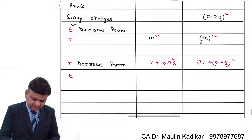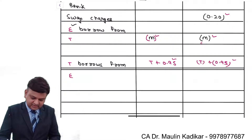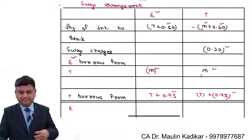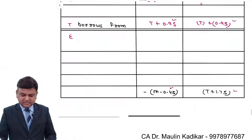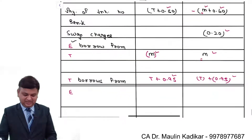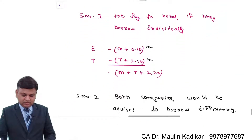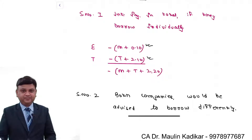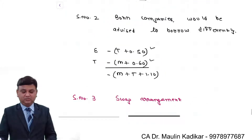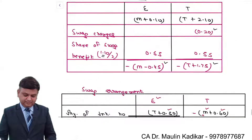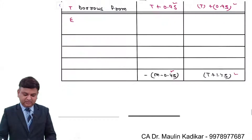There is a correction: the signs for payment and receipt in the table need to be shown correctly — this is the payment and this is the receipt. To summarise: Step 1 shows individual borrowing totals, Step 2 shows collective borrowing with savings, and Step 3 sets up the full swap arrangement and final interest costs.